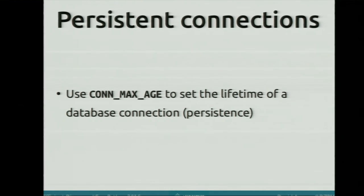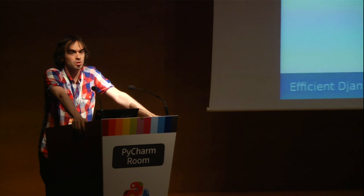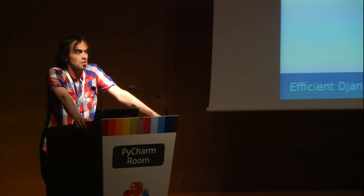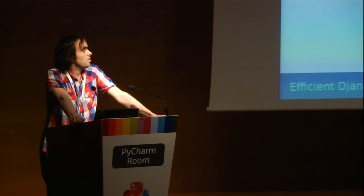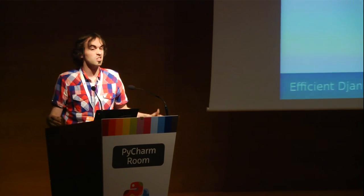Persistent connections to the database — another Django setting that by default is not set and you have to enable it. This says that a connection to the database can persist for, say, 60 seconds. Otherwise, it will close the connection and open it again repeatedly. You can set it to true for forever, but it's better to close the connection after a few seconds because if you have connectivity issues the connection stays open, and other workers or app servers won't be able to connect. So set it for a minute or five minutes — the important thing is avoiding lots of new connections all the time.